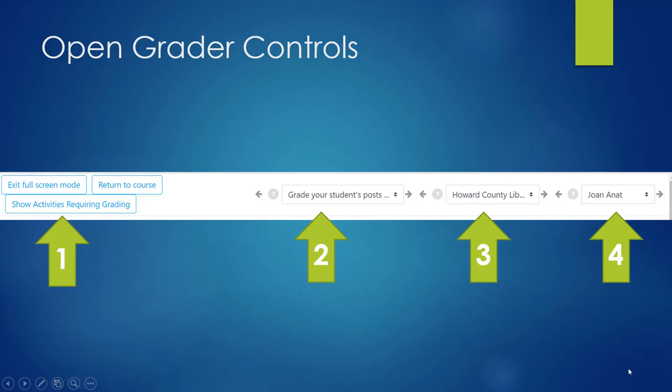The OpenGrader control panel is at the top of your screen. There are four main controls: buttons that take you back to the course, shift between full screen mode and regular mode, and an all-important button that shows you only activities that require grading. You will use this button a lot.